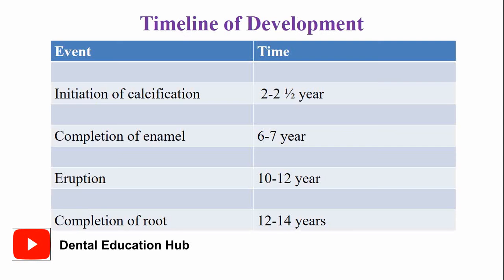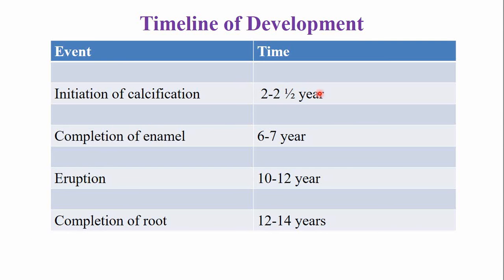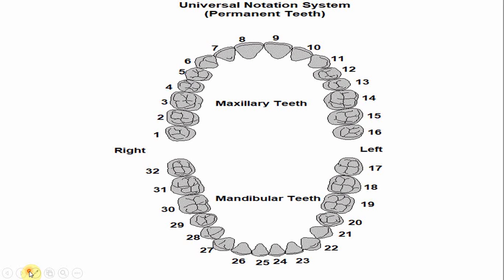The calcification of this tooth begins by the age of two to two and a half years, and the completion of enamel is around the age of six to seven years. This tooth emerges into the oral cavity by the age of ten to twelve years, and root completion is around the age of twelve to fourteen years.